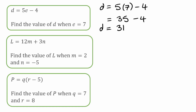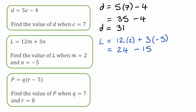Moving on, we've got L is equal to 12M plus 3N. We want to find the value of L when M is equal to 2 and N is equal to negative 5. We rewrite this: L is equal to 12 times bracket 2, plus 3 times bracket negative 5. Working through: 12 times 2 is 24. Then positive 3 times negative 5 — a positive and a negative make a negative, and 3 times 5 is 15 — so that gives us negative 15. So we've got 24 take away 15, which leaves us with 9. So L is equal to 9.